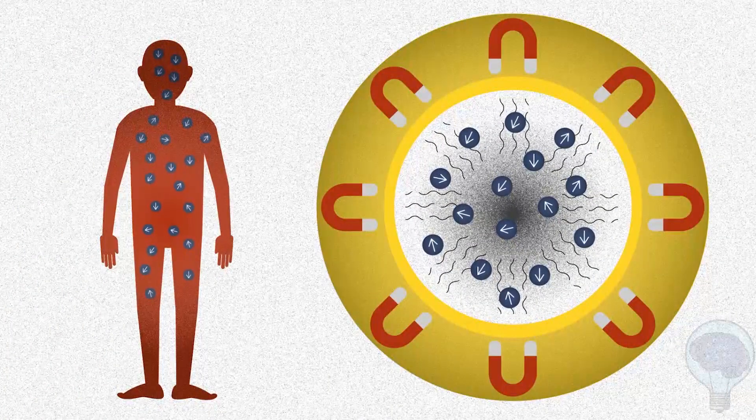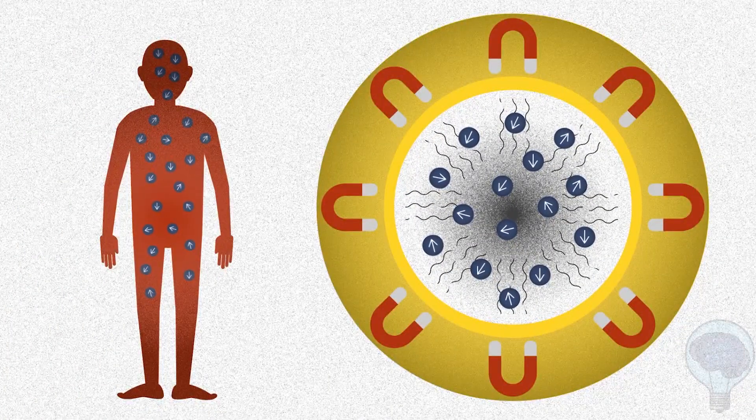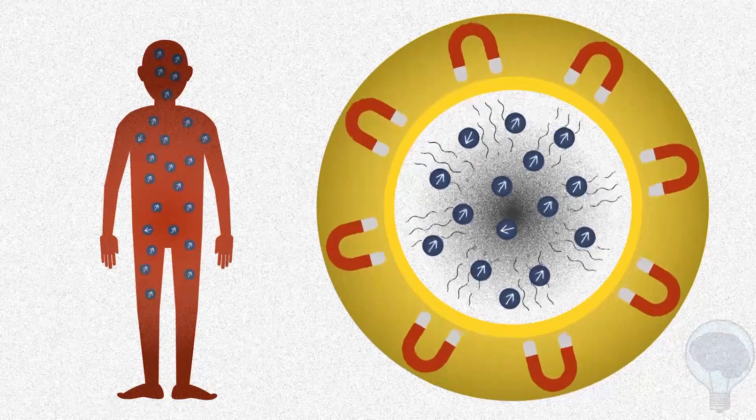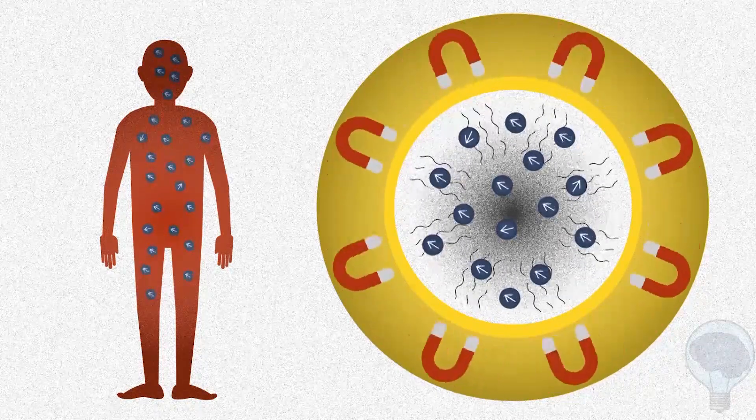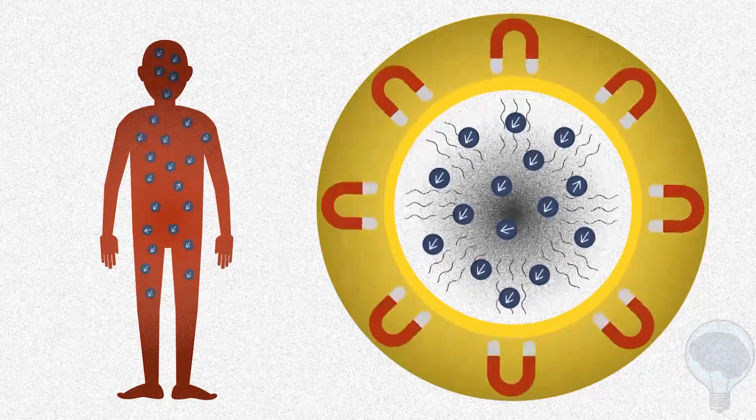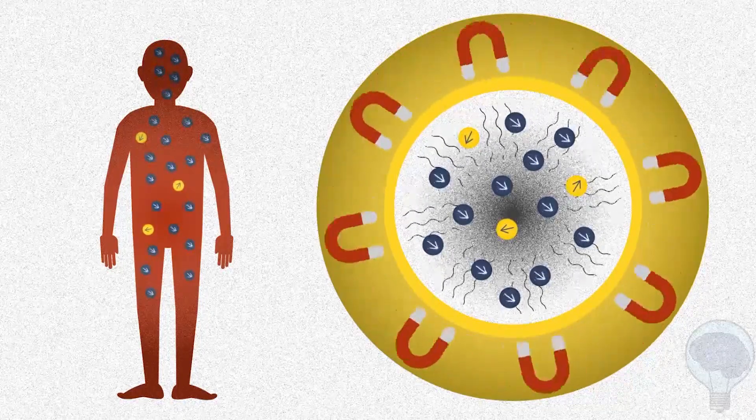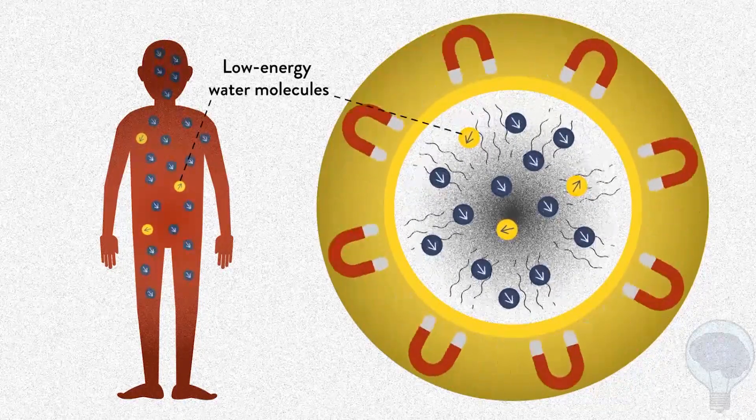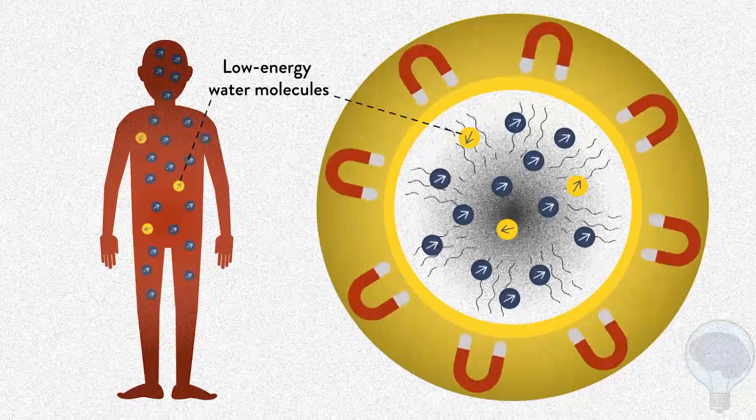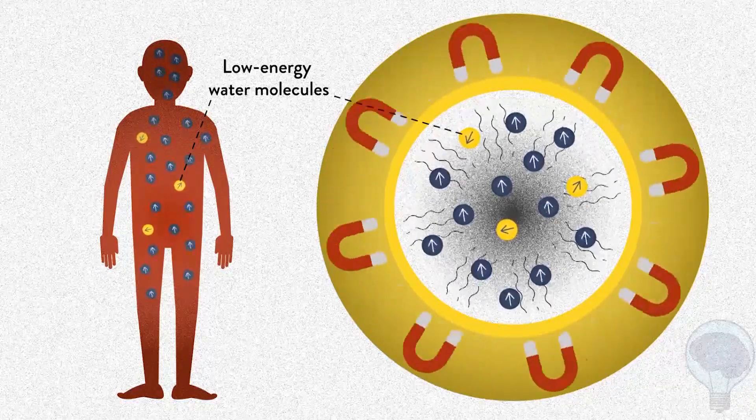Normally, the water molecules inside us are arranged randomly, but when we lie inside the magnetic field, most of our water molecules move at the same rhythm or frequency as the magnetic field. The ones that don't move along the magnetic field are called low-energy water molecules.